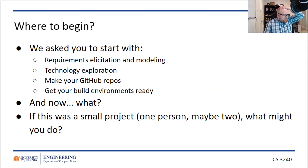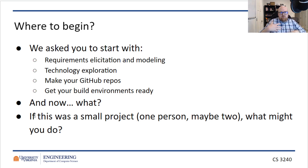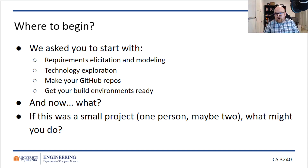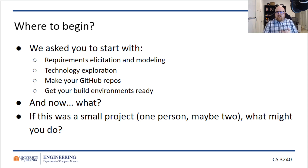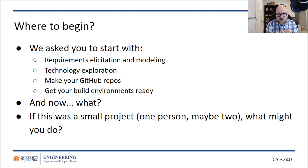So where to begin? We've already talked about requirements solicitation — that's our first part. We then talk about modeling those requirements. In the case of your project, you've hopefully gotten requirements from a survey and done some type of technology exploration. We've talked about using a Google sign-in — hopefully you've started exploring that already. You've made your GitHub repo and your build environments. Now what?